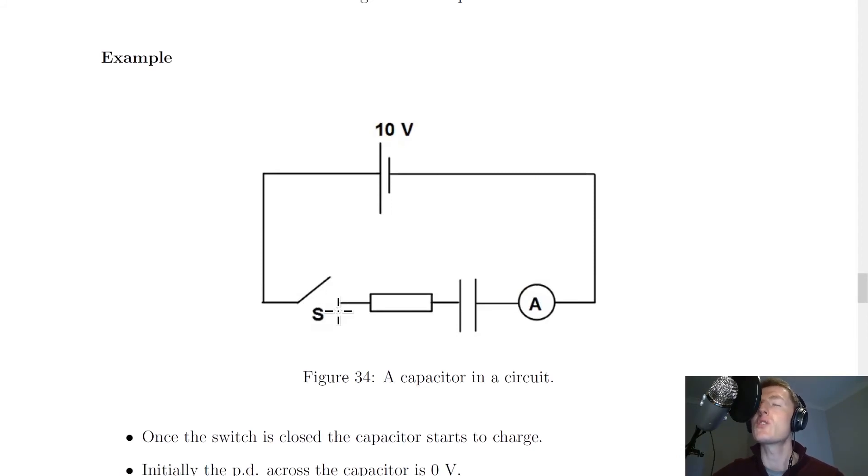Initially, when the switch is just closed, we have our maximum current flowing in the circuit. But as the capacitor charges up over time, the current in the circuit will decrease. That's to do with the electrons building up on one of the plates of the capacitor.